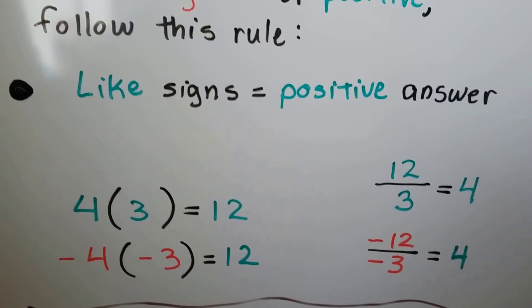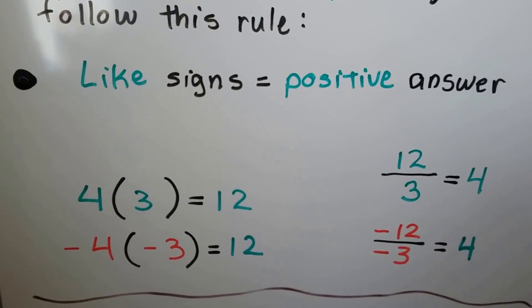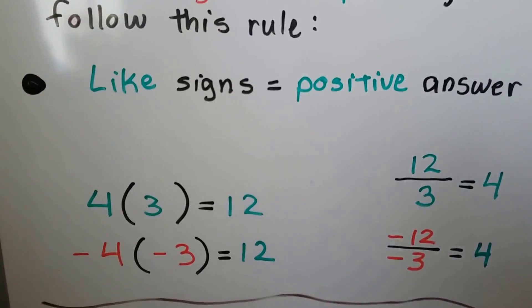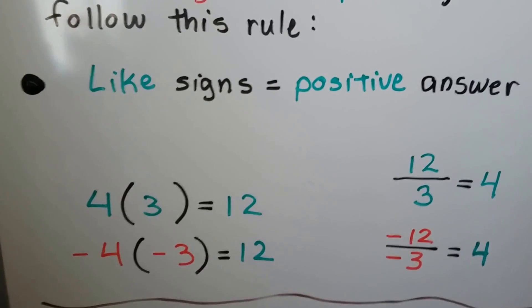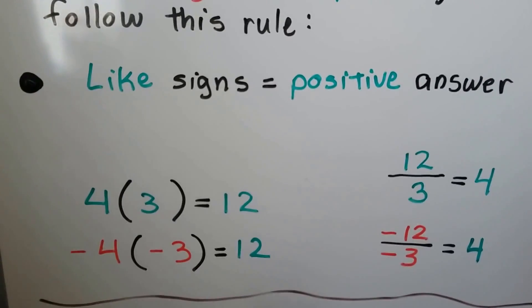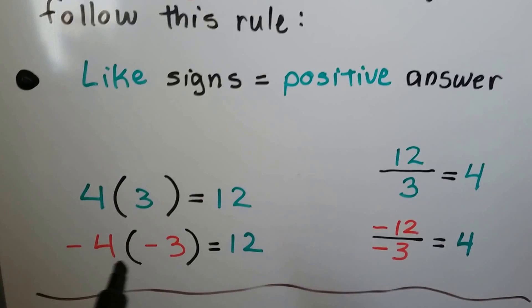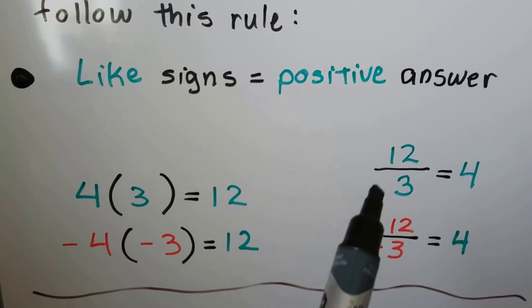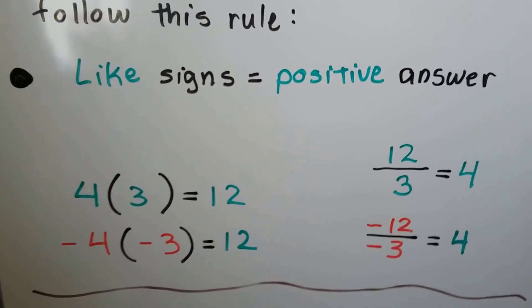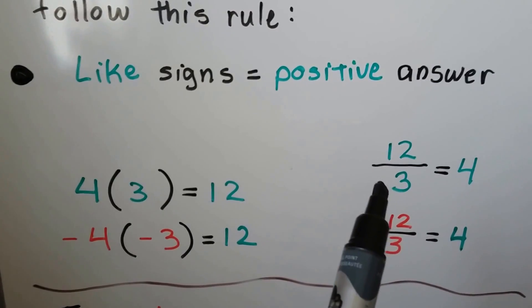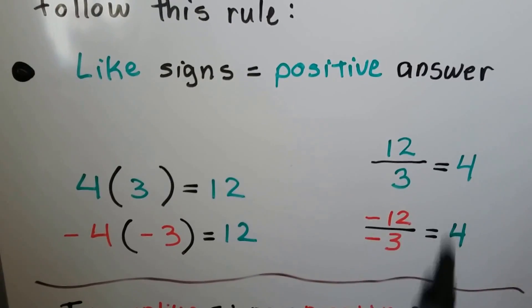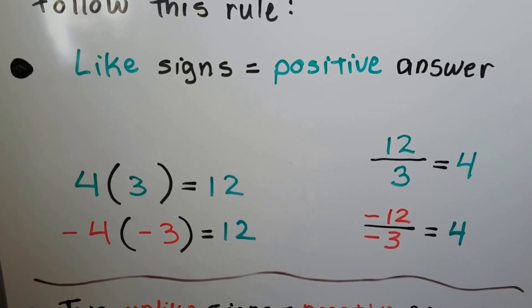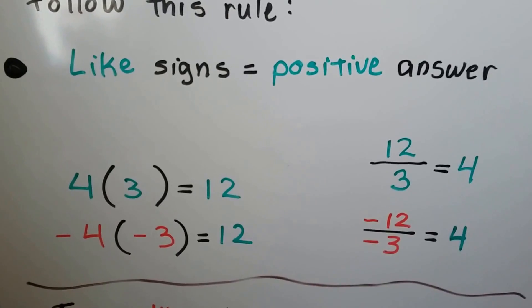When we have like signs, we're going to have a positive answer. It doesn't matter if they're both positive or both negative — if they're like signs, it's going to be a positive answer. Remember, parentheses means multiplying, and fractions are little division problems. So 12 divided by 3 gives us a positive 4. And if they're both negative, that's still going to give us a positive, because they're like signs.